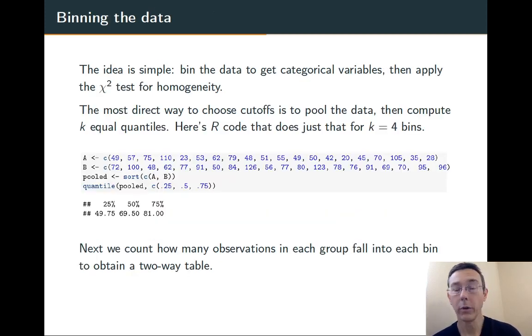We want to use a chi-squared test, so the obvious thing to do is bin the data. Once we have it binned, we've got categories and can directly apply a chi-squared test for homogeneity. The only real question here is how we're going to bin the data.